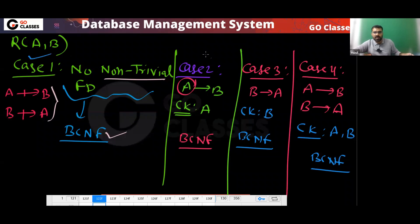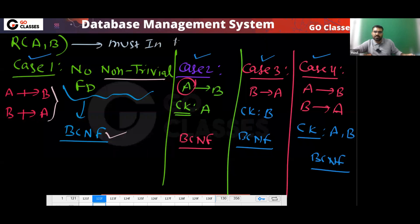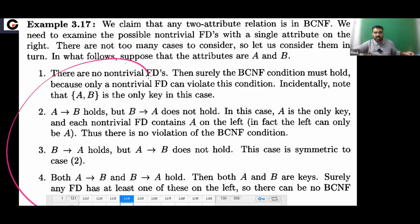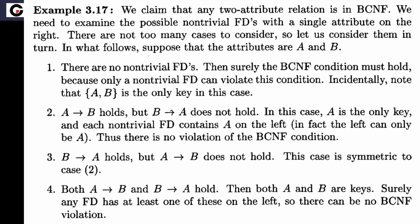So whatever case applies — case one, two, three, or four — all four cases result in the relation being in BCNF. Therefore, if your relation has only two attributes, it will definitely be in BCNF, because in each of the four possible cases, the relation satisfies the BCNF condition.